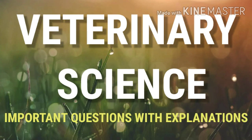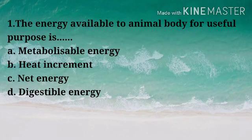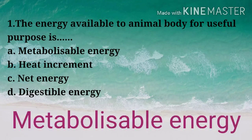Question: The energy available to the animal body for useful purposes is — Options: A) Metabolizable energy, B) Heat increment, C) Net energy, D) Digestible energy. Correct answer: Option A — Metabolizable energy.